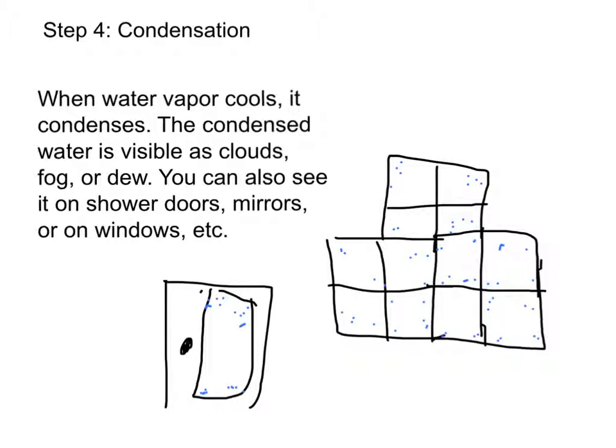Step 4: Condensation. When water vapor cools, it condenses. The condensed water is visible as clouds, fog, or dew. You can also see it on shower doors, mirrors, or on windows, plus more.